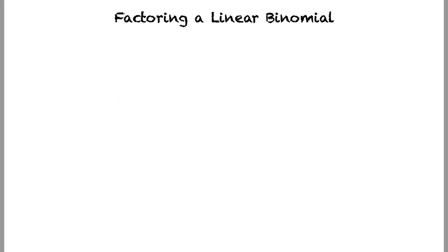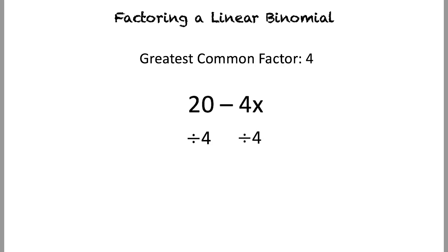Let's try one more example. Here, we have 20 minus 4x. The greatest common factor is 4, so we will divide both 20 and negative 4 by 4. Our final result will be 4 times 5 minus x in parentheses.